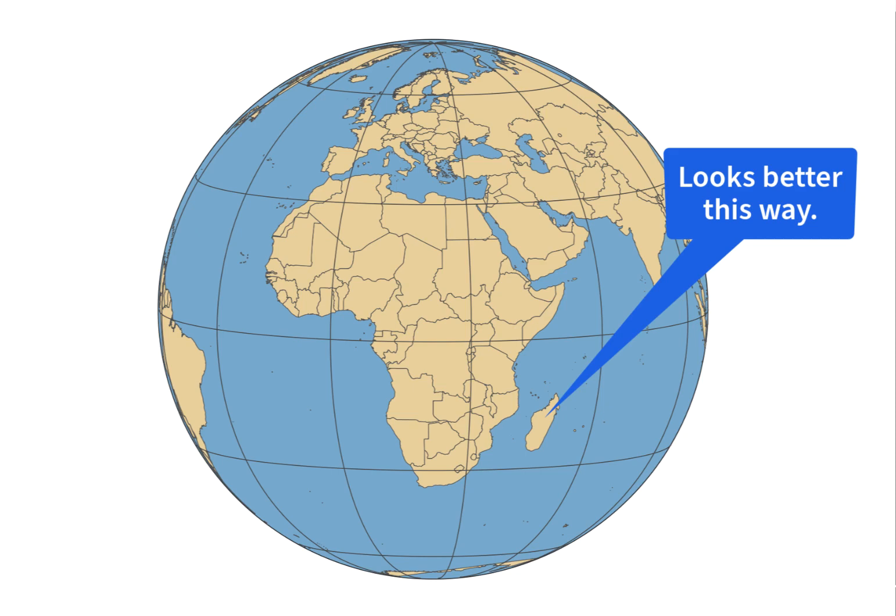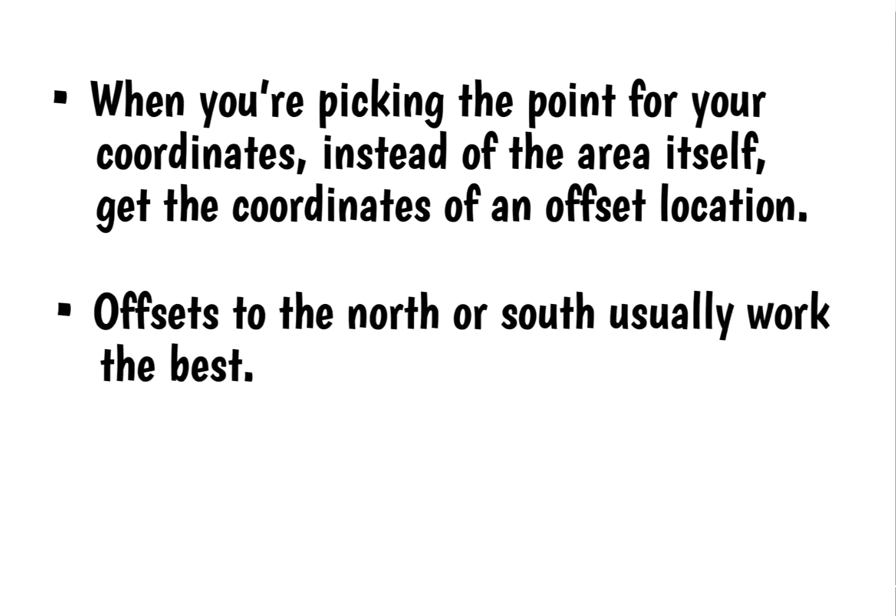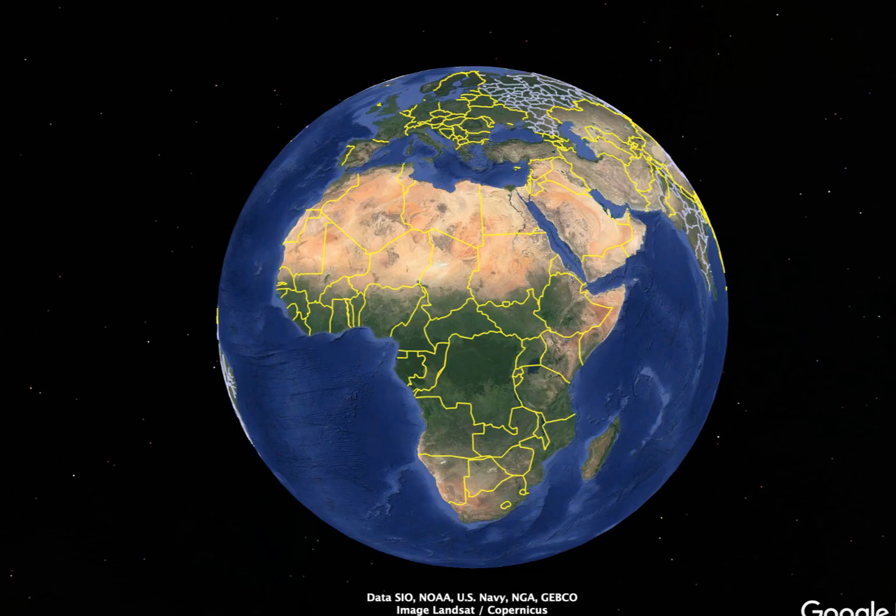This is easy to do. When you're picking the point for your coordinates, instead of the area itself, get the coordinates of an offset location. Offsets to the north or south usually work the best. Google Earth is helpful for this. Here I've shifted the globe so that Madagascar is south and east of the center point. This looks more natural and recognizable to me.